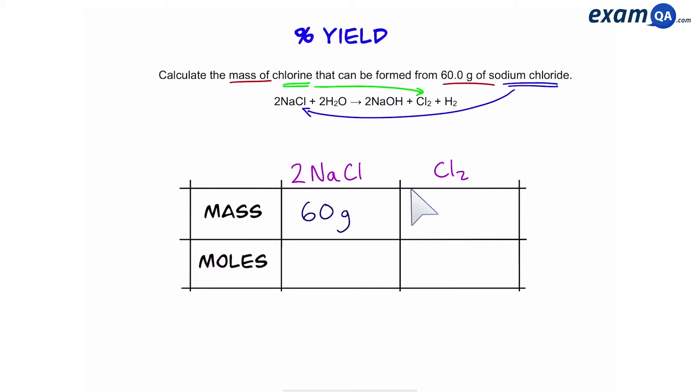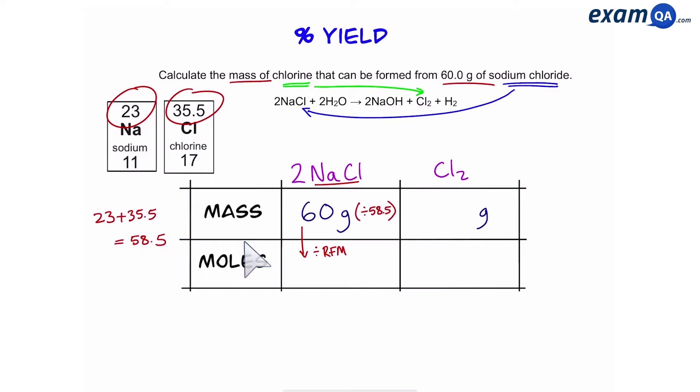We're going to write down sodium chloride and chlorine because those are the two chemicals we identified. Now we already know the mass of sodium chloride is 60 grams, and we want to work out the mass of chlorine. So first, let's convert mass into moles by dividing by the relative formula mass of sodium chloride. This means one sodium and one chlorine. Using the periodic table, that's 23 plus 35.5, which gives us 58.5. So we're going to do 60 divided by 58.5 and that gives us 1.03 moles.